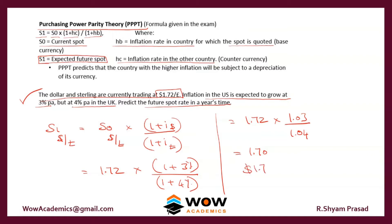The only difference between Interest Rate Parity and Purchasing Power Parity is that in Interest Rate Parity you use the interest rate figures, whereas in Purchasing Power Parity you use the inflation rate figures. Even if a question gives you both interest rates and inflation rates, in Purchasing Power Parity you must take the inflation rate alone.